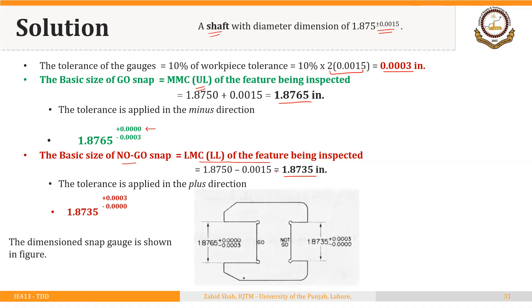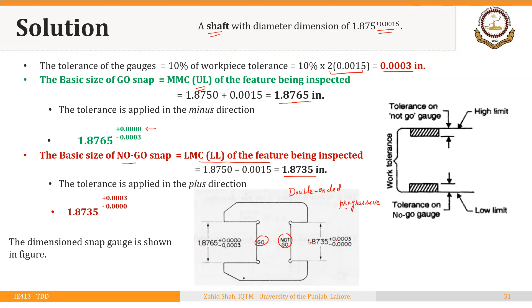This is the drawing of the gauge showing the double-ended snap gauge, where the go and no-go gauges are on opposite sides. We could also have a progressive snap gauge where the go and no-go are on the same side, but the dimensions would be the same. The go snap has a size of 1.8765 and the no-go has a size of 1.8735. It is always good to have a graphical analysis of the sizes.